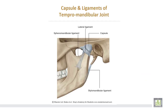This is the capsule of the joint. This is the lateral ligament. And this is the sphenomandibular ligament. And this is the stylomandibular ligament.